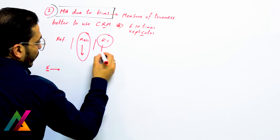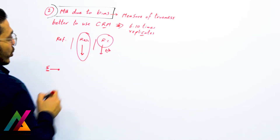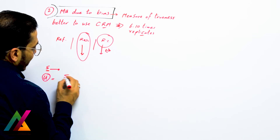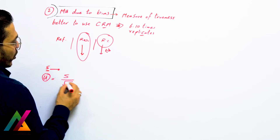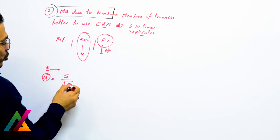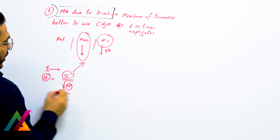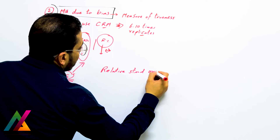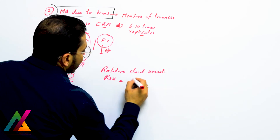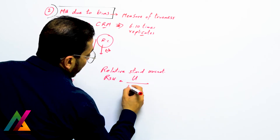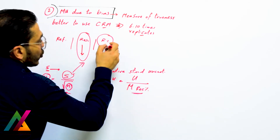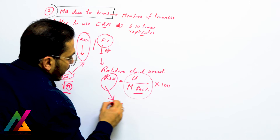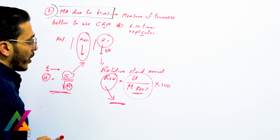From the results you calculate the standard deviation between all replicates. Recovery for each individual result should also be within the acceptable range. Then you calculate the standard uncertainty, which equals the standard deviation divided by the square root of n (the number of replicates). Then you calculate the relative standard uncertainty, which equals the standard uncertainty divided by the mean recovery, multiplied by 100. This relative standard uncertainty is your measurement uncertainty value due to bias.